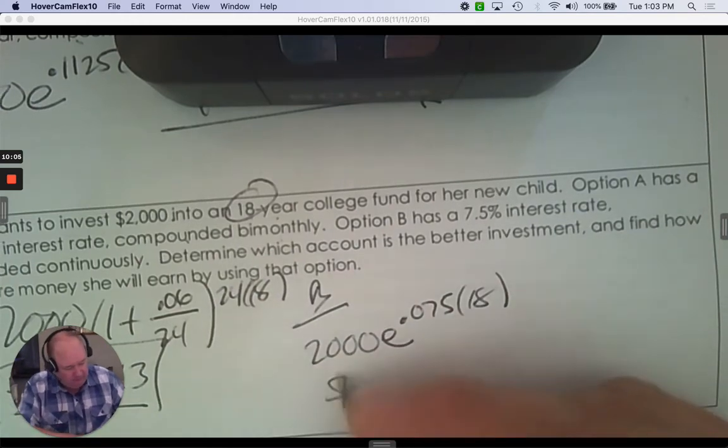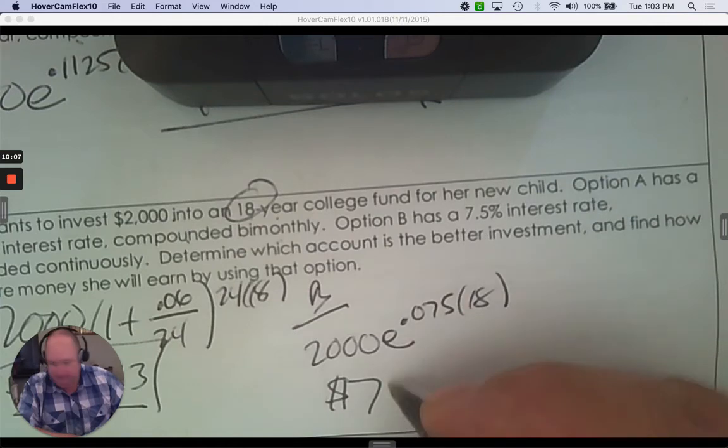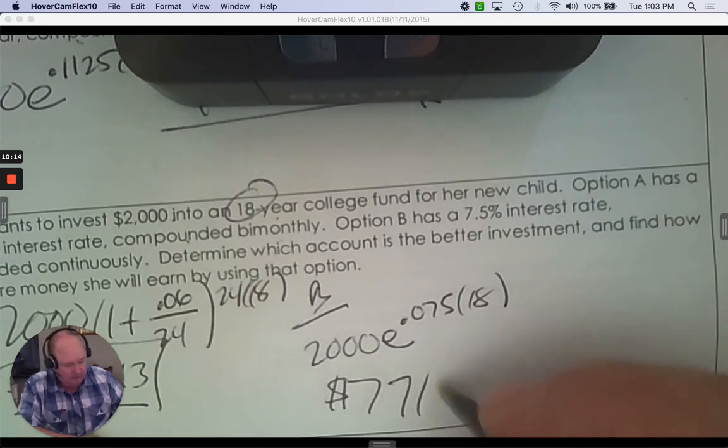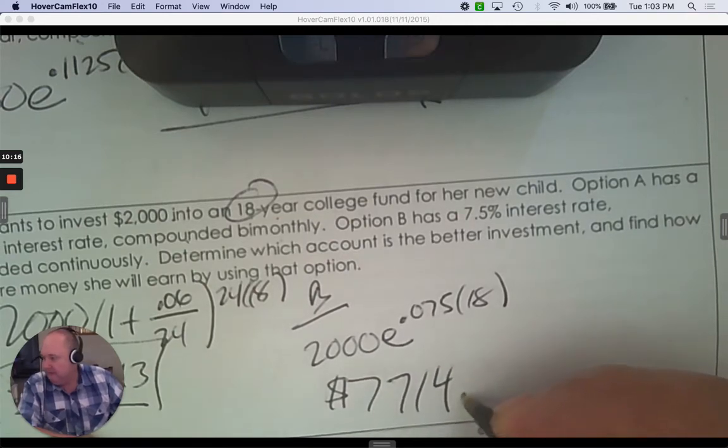And which one's the better option? I can already tell before you even calculate it. 7.5% and compounded continuously. Both are better. $7,714.85.